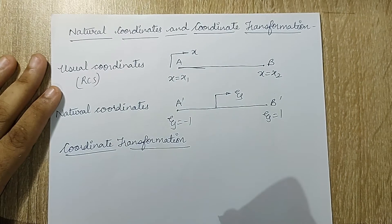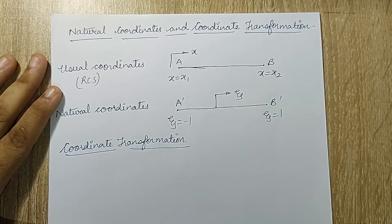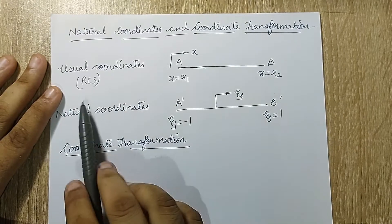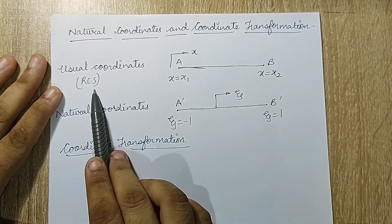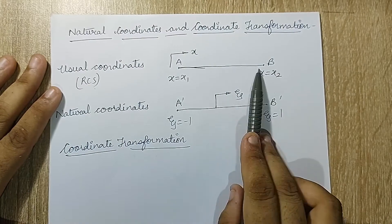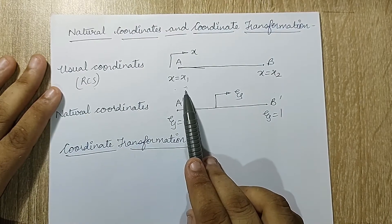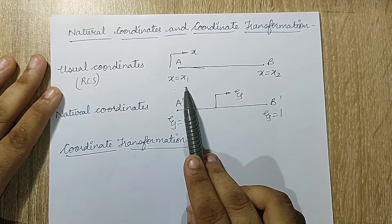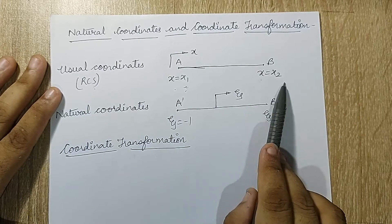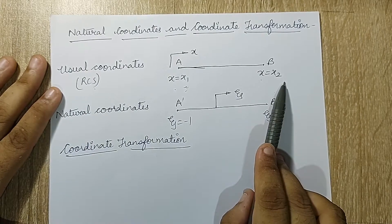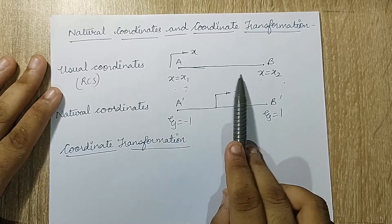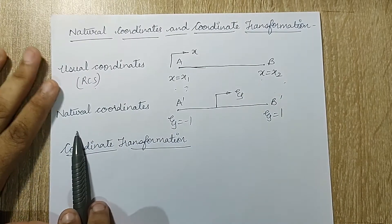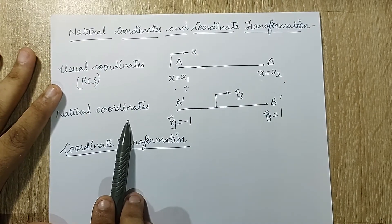When we talk about usual coordinates, which is the rectangular coordinate system, this linear element A-B will have one end at x = x₁, which can be 0, and the other end at x = x₂, which can be denoted as 'h' — the length of the element, as we had in the last problem.